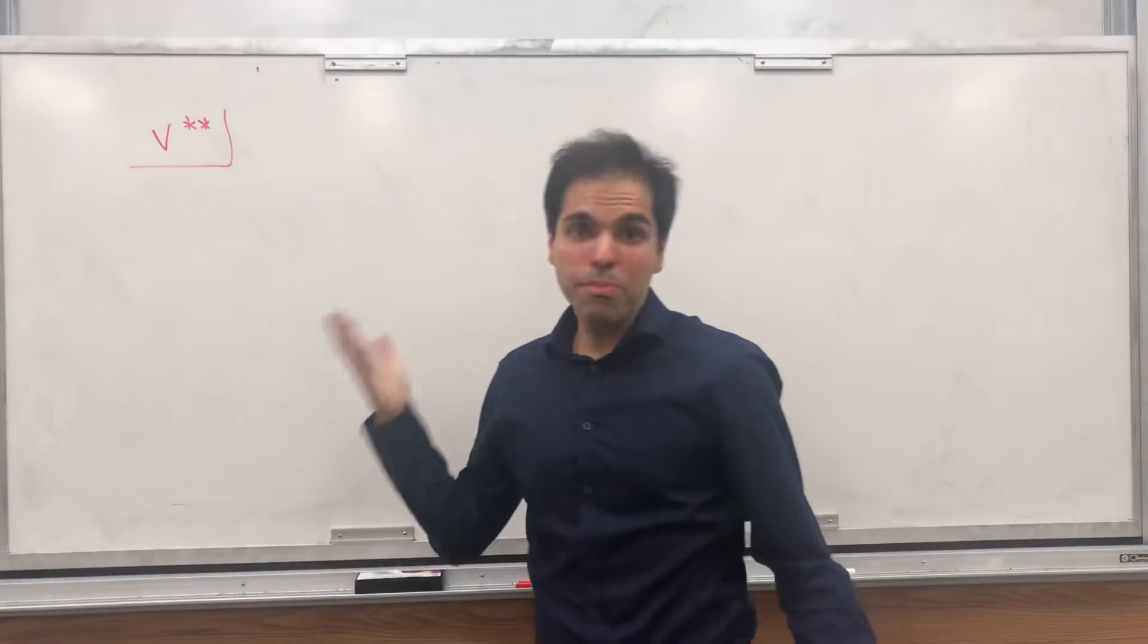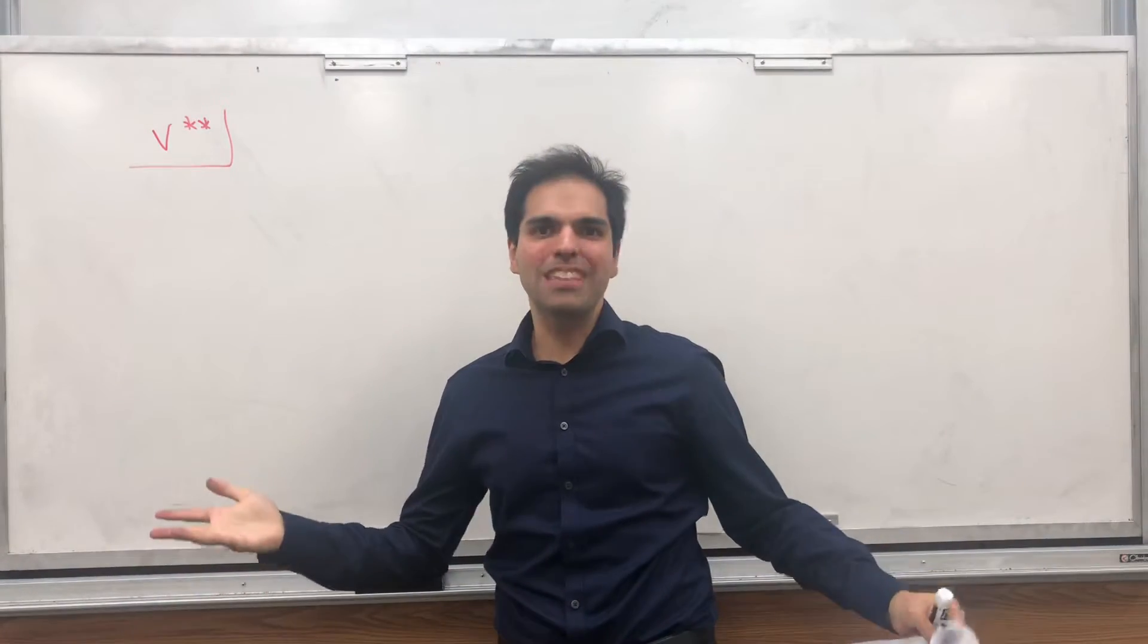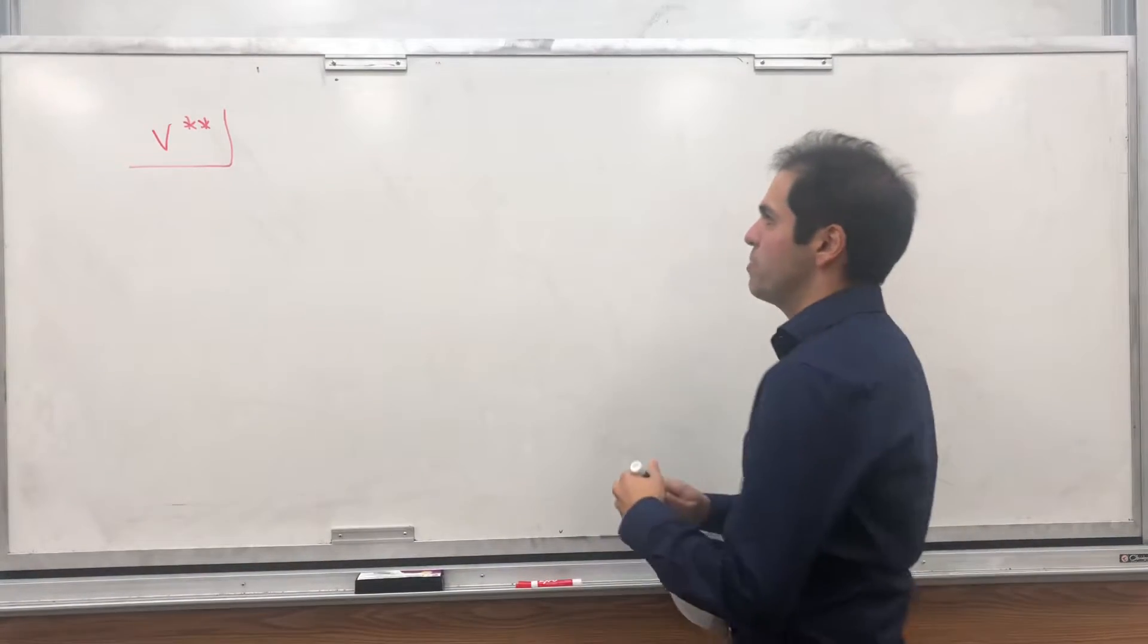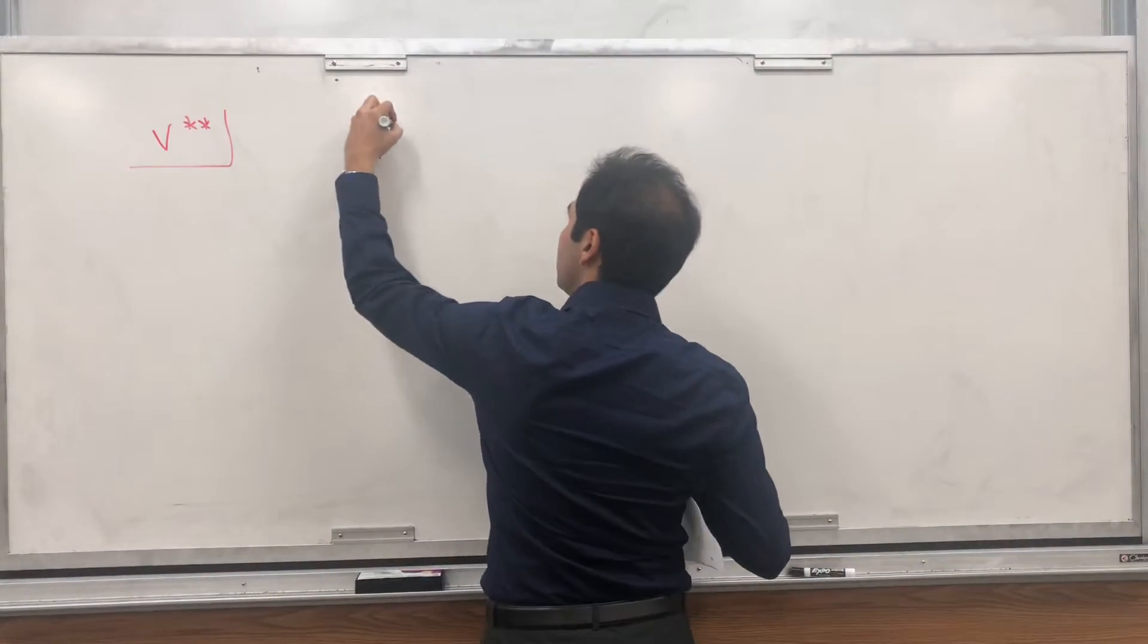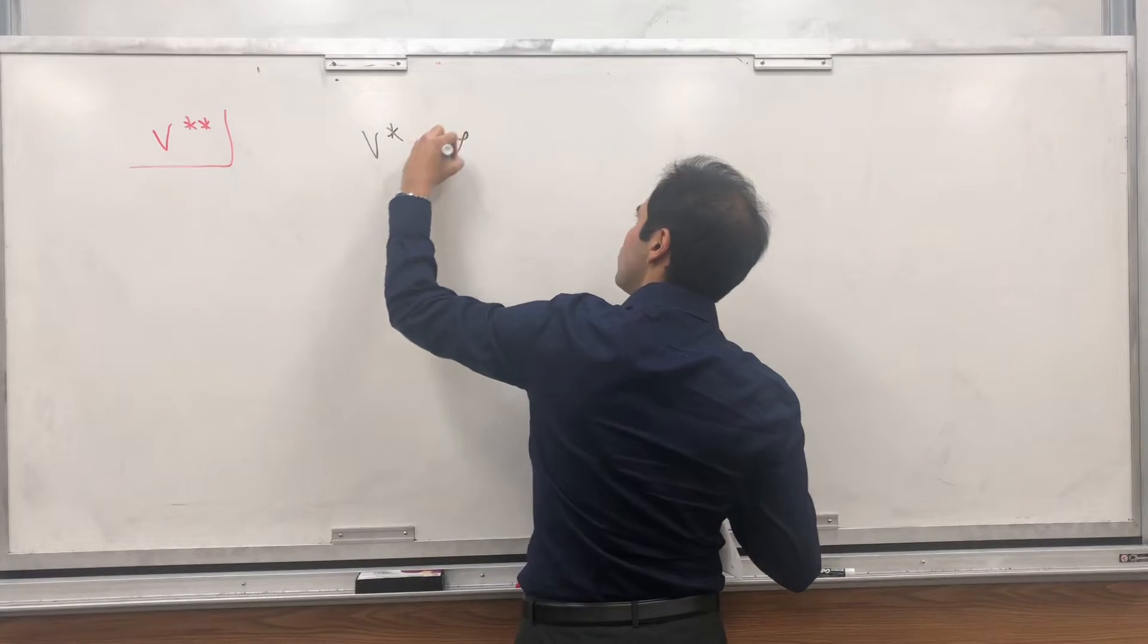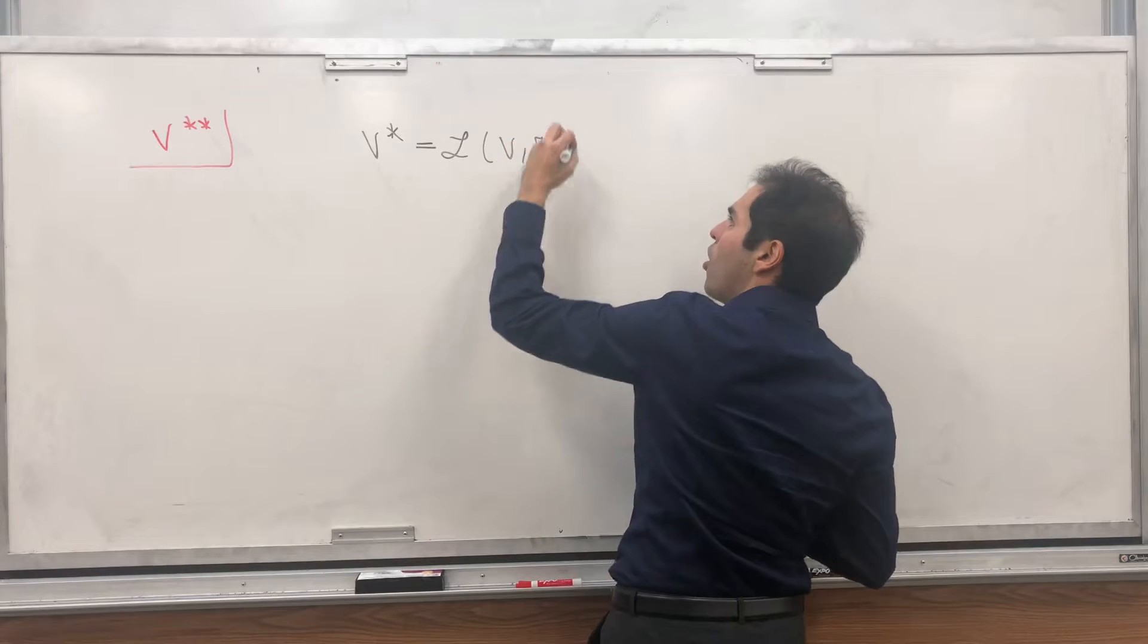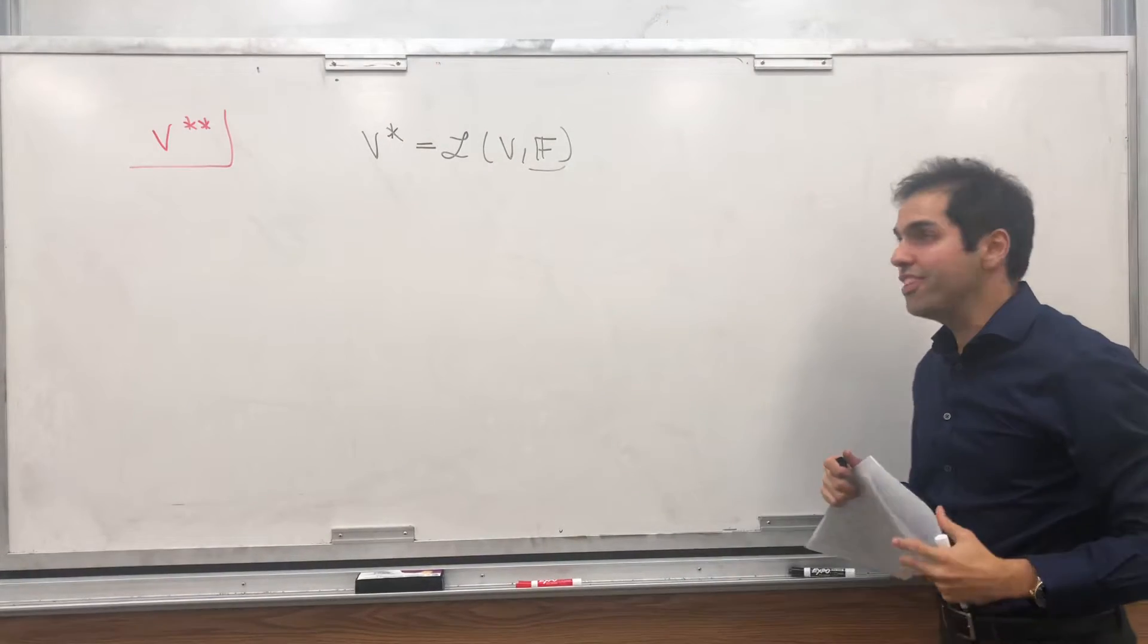Alright, thanks for watching, and previously on our dual space adventure, we defined the dual space of a vector space, which is simply the set of linear transformations from a vector space to, let's say, R or C, or any field if you'd like.